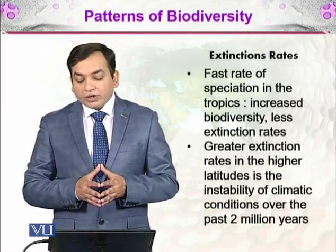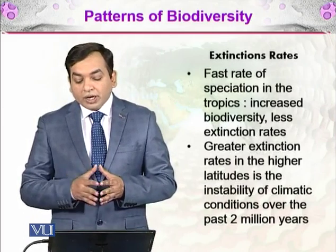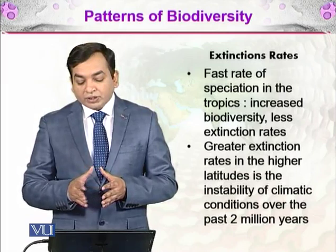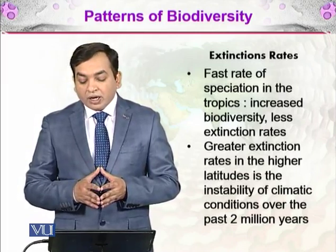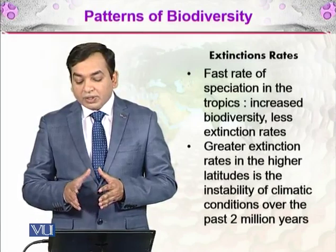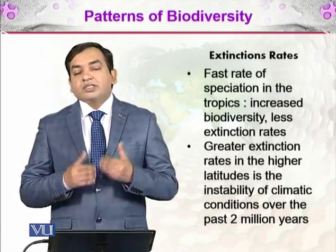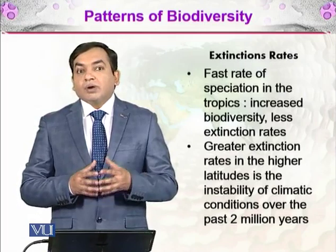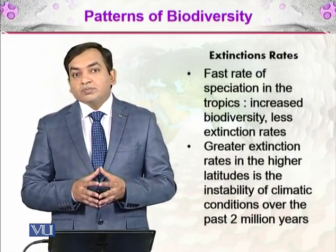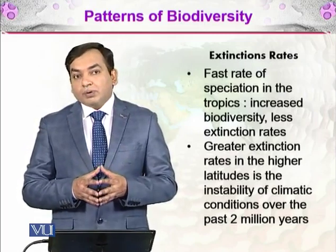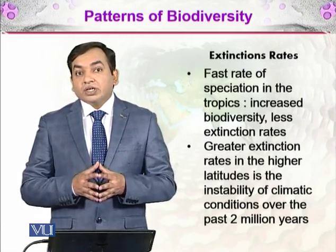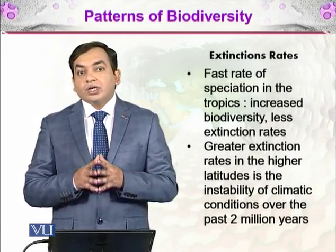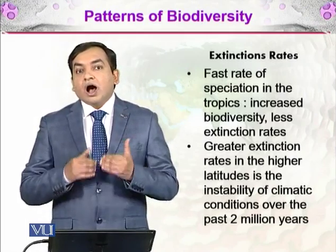The faster rate of speciation in the tropics resulted in increased biodiversity and less extinction rates. In contrast, due to environmental changes, greater extinction rates occurred in the higher latitudes because of the instability of climatic conditions over the past two million years. The climate changed, glaciers formed, plants couldn't grow, and the organisms which depended on the plants couldn't survive — resulting in extinction. The legacy of that extinction is that we have less biodiversity away from the tropics.